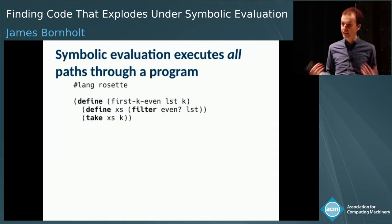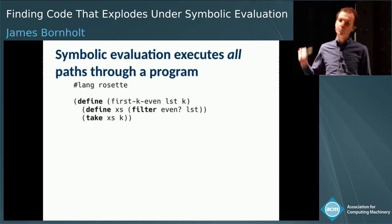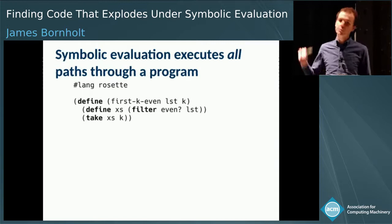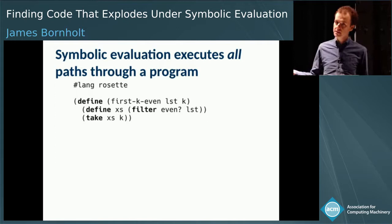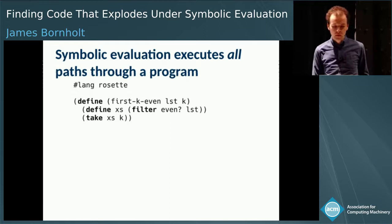To do that, I want to show you a really simple example of a program you might write in Rosette. Rosette is an extension of Racket with support for symbolic evaluation — it supports verification and synthesis. Here's a really simple function. It takes as input a list of numbers and another number k, and it gives you back the first k elements of that list that are even.